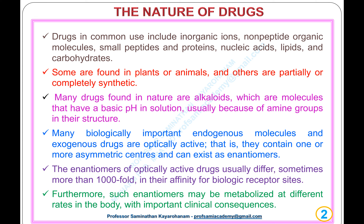Many drugs found in nature are alkaloids, which are molecules that have a basic pH in solution, usually because of amine groups in their structure. Many biologically important endogenous molecules and exogenous drugs are optically active — they contain one or more asymmetric centers and can exist as enantiomers. The enantiomers of optically active drugs usually differ, sometimes more than one thousand-fold, in their affinity for biologic receptor sites. Furthermore, such enantiomers may be metabolized at different rates in the body, with important clinical consequences.